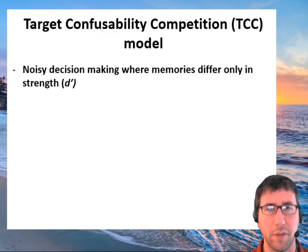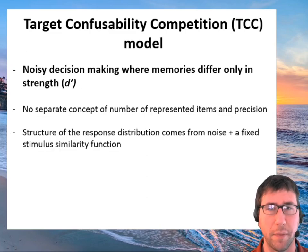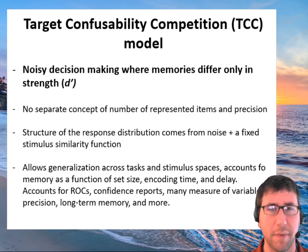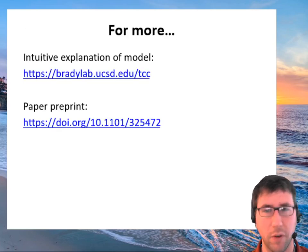Okay, so the model is that noisy decision making is the core of things. Memories differ only in strength. There's no separate concept of number of represented items and precision. The structure of the response distribution comes from noise, plus a fixed stimulus similarity function. And notably, this not only accounts for memory as a function of set size, encoding time, and delay, but allows generalization across tasks, like those two-AFC tasks, and stimulus spaces, accounts for ROCs, confidence reports, many measures of variable precision, long-term memory, and much more. So I hope I've at least made you interested in this. For an intuitive explanation of the model, go there, and to see the paper pre-print, you can go there. So thank you very much for your time, and have a good CNS.